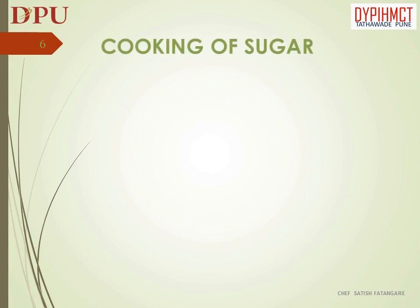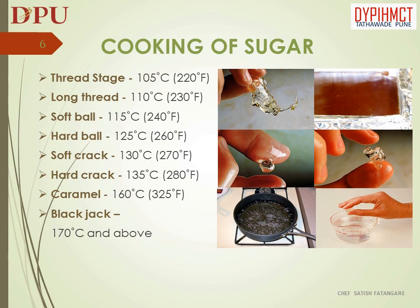In this slide we will discuss about various cooking stages of sugar. Thread stage: 105°C or 220°F. Long thread: 110°C or 230°F. Soft ball: 115°C or 240°F. Hard ball: 125°C or 260°F. Soft crack: 130°C or 270°F. Hard crack: 135°C or 280°F. Caramel: 160°C or 325°F. Black jack: 170°C and above.